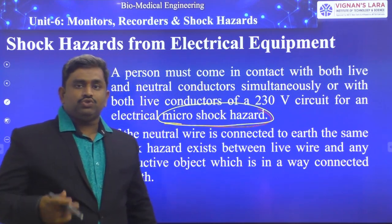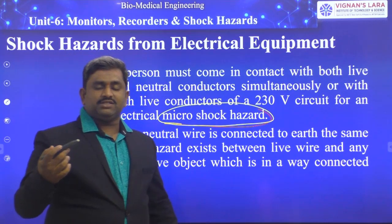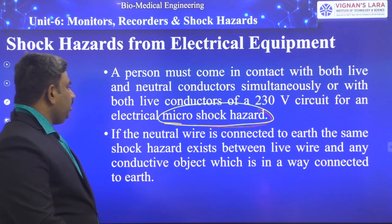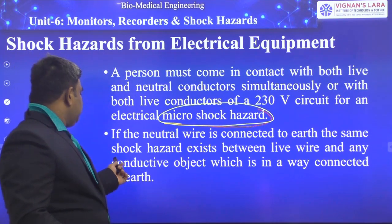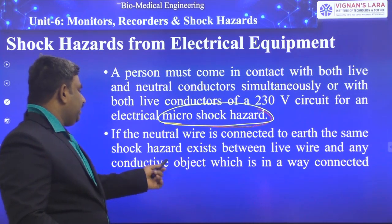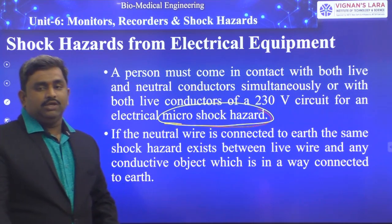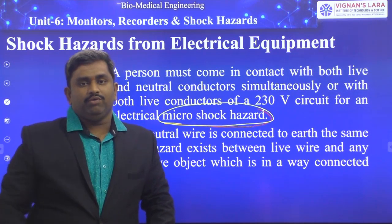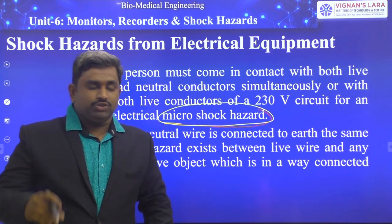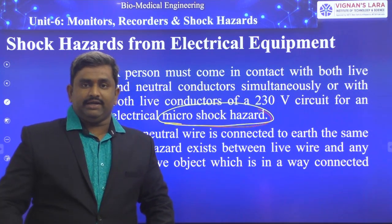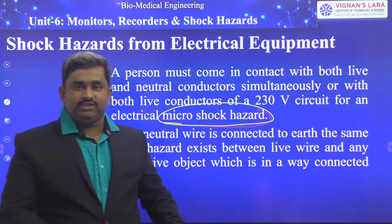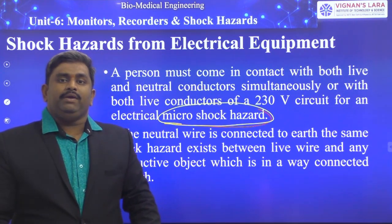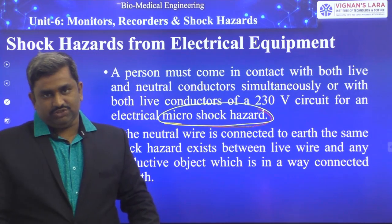For microshock, one conductor comes into contact internally with the body. If the neutral wire is connected to earth, the same shock hazard exists between the live wire and any conductive object connected to earth. So wherever the neutral wire is connected to ground, if the human body or conductor comes into contact with that neutral wire, the shock will happen to the patient's body.